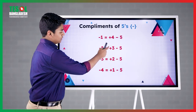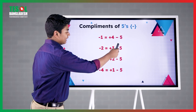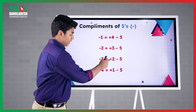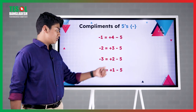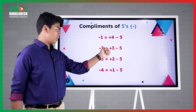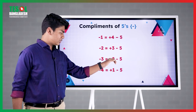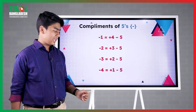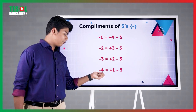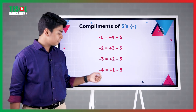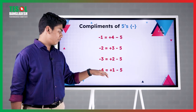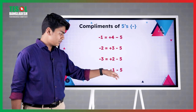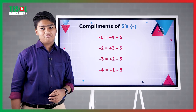Minus 2 equals to — since 3 is a friend of 2 — we will add 3 and then subtract 5. Very easy. Then minus 3 equals to plus 2 minus 5, since 2 is a friend of 3. So minus 3: 2 is 3's friend, so plus 2 and then minus 5, since 5 is the captain. Then minus 4 equals to plus 1 minus 5. 1 is a friend of 4, so minus 4 equals to plus 1 minus 5. Very easy.